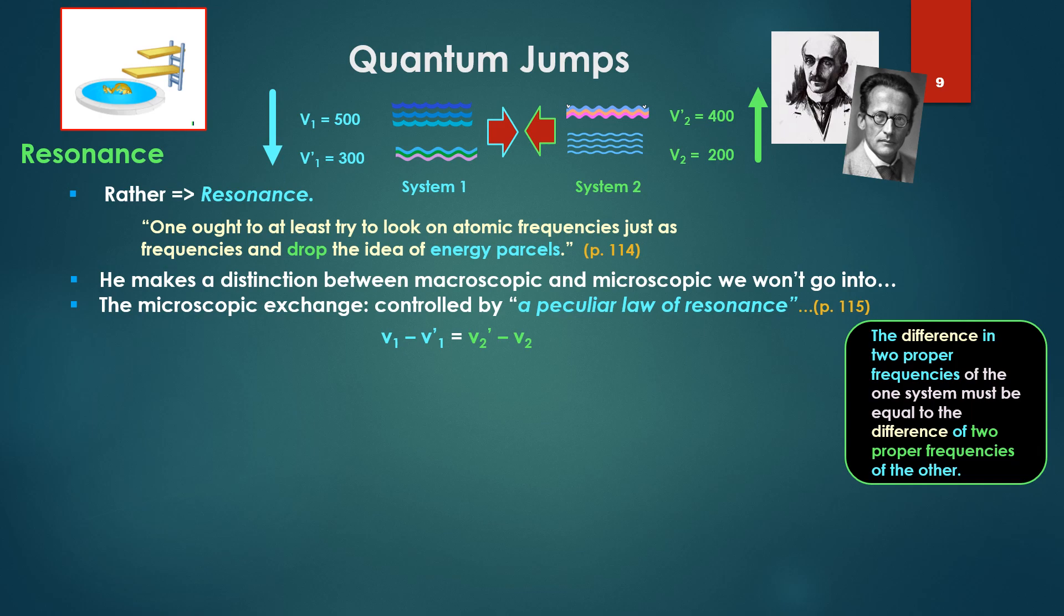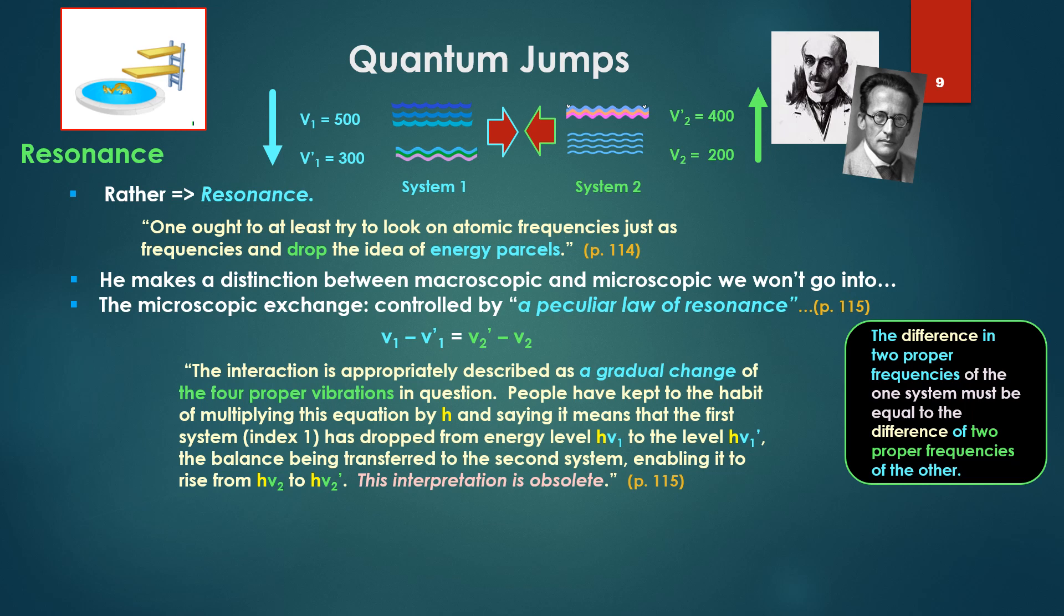The interaction is appropriately described as a gradual change, gradual, of the four proper vibrations in question. The four being ν₁, ν'₁, ν₂, ν'₂.